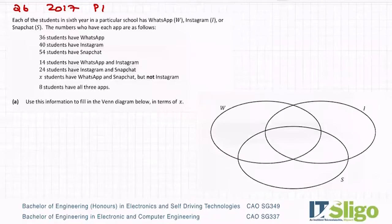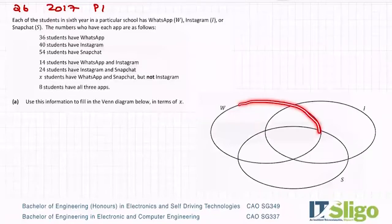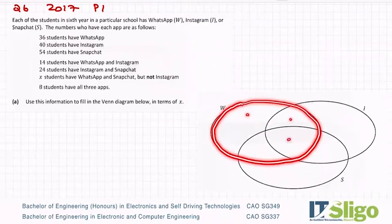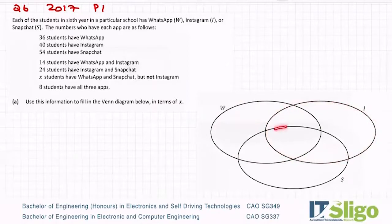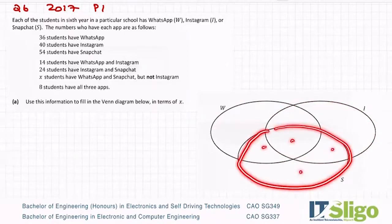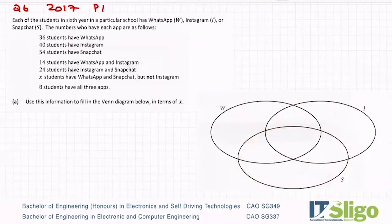36 have WhatsApp — be careful, it's not 36 that goes in one area. It's 36 that goes into all of the different areas that make up WhatsApp. The same with Instagram: 40 goes into all four areas that make up Instagram. And then Snapchat, again the same — 54 is the sum of the four areas. So just like before, we always have to start with the inside.